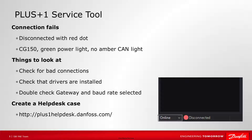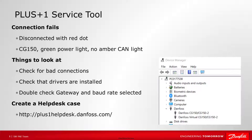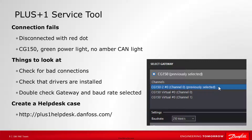If the connection still fails, with the service tool saying disconnected at the bottom with a red dot, and the CG150 has a green power light but no amber CAN light, check for bad connections and make sure the Danfoss CG150 driver is installed. When you go to select the CG150 in the Communications menu, be sure the correct CG150 and baud rate is selected. You can also create a help desk case at plusonehelpdesk.danfoss.com. Be sure to let us know what version of service tool and hardware you are working with.